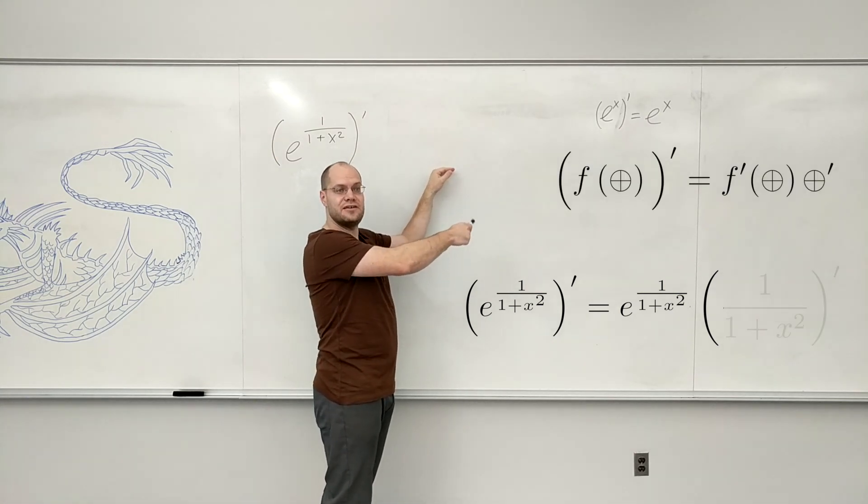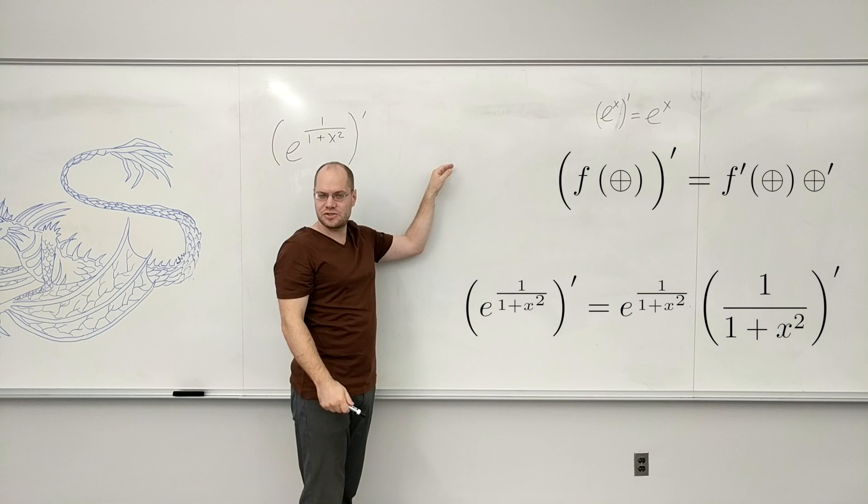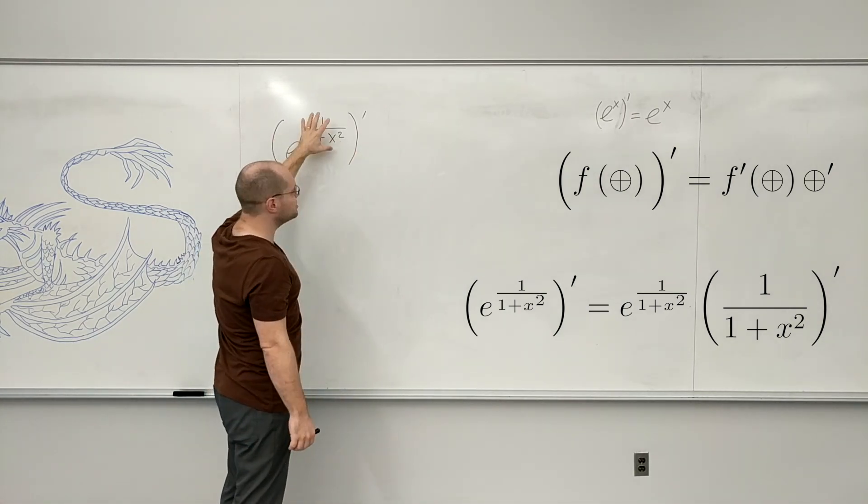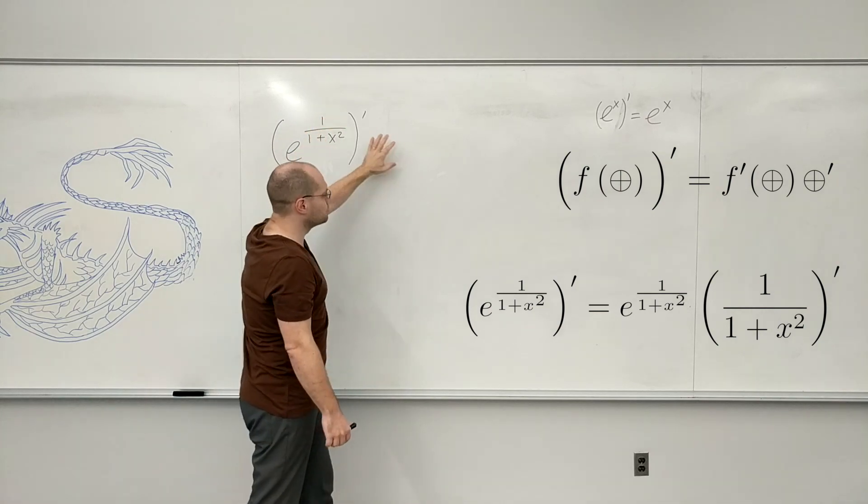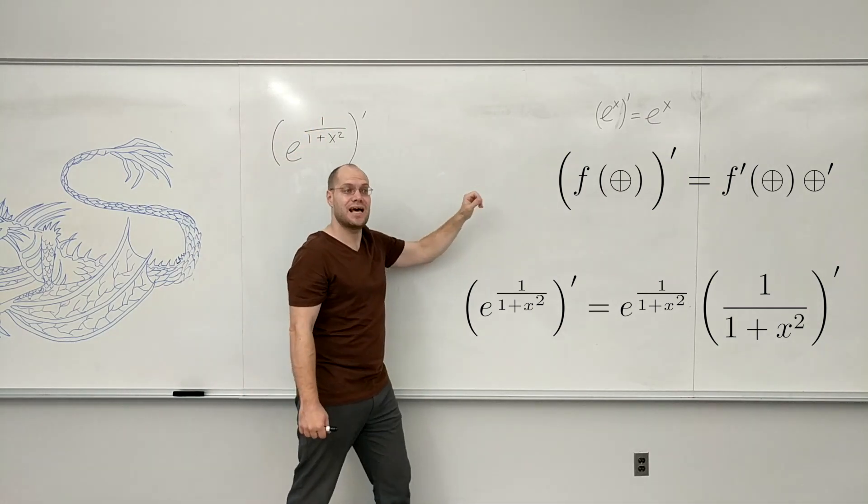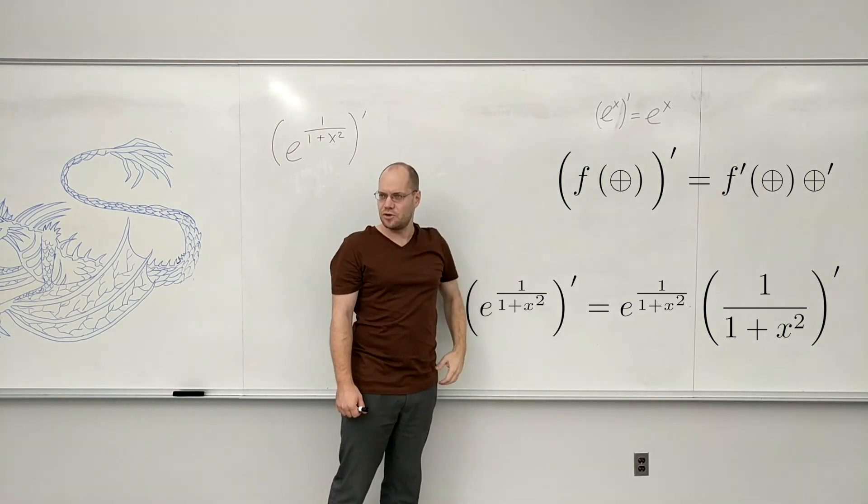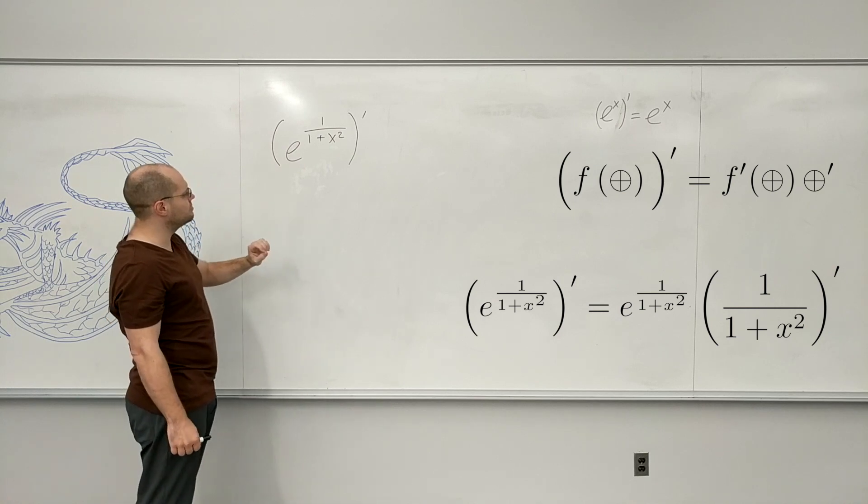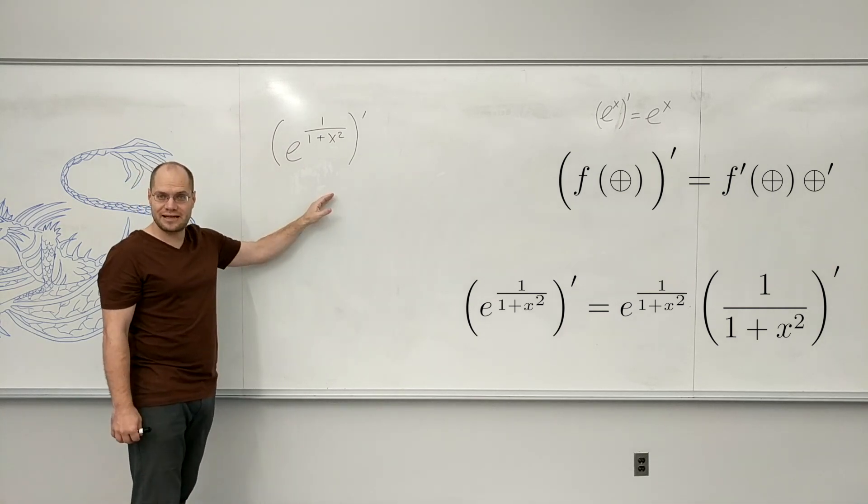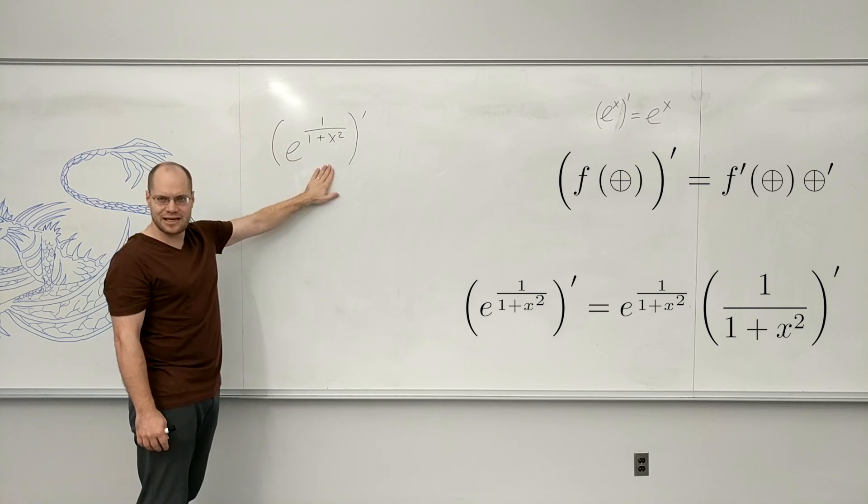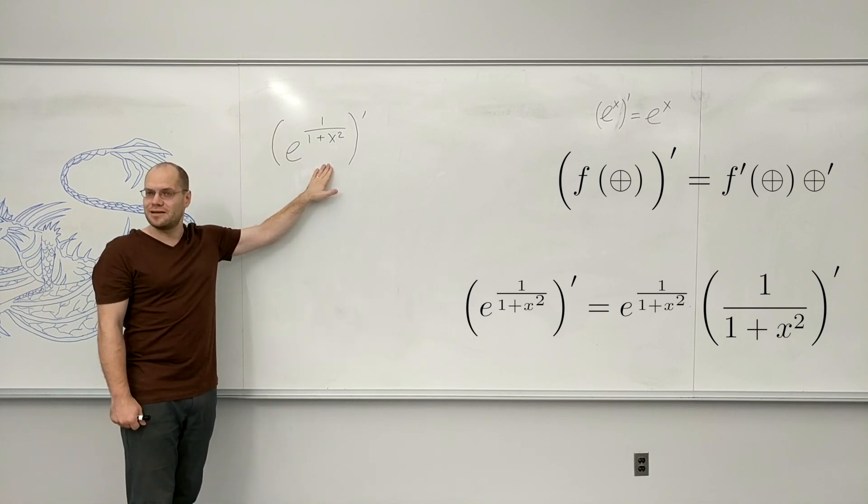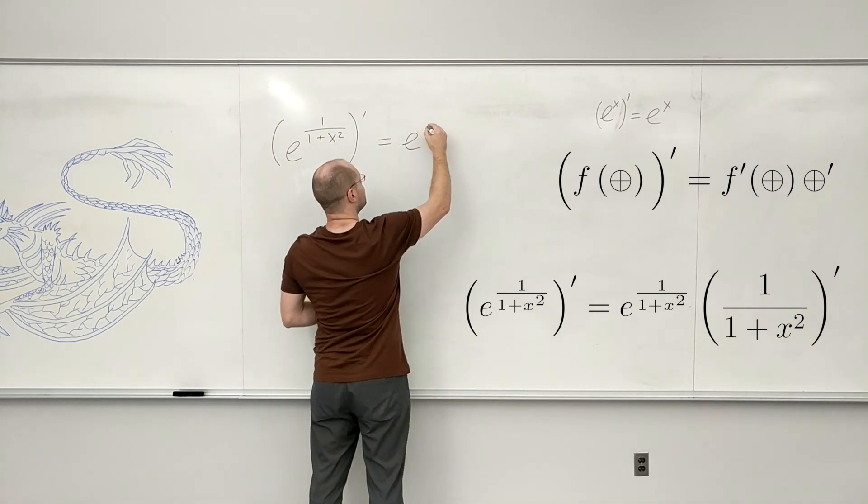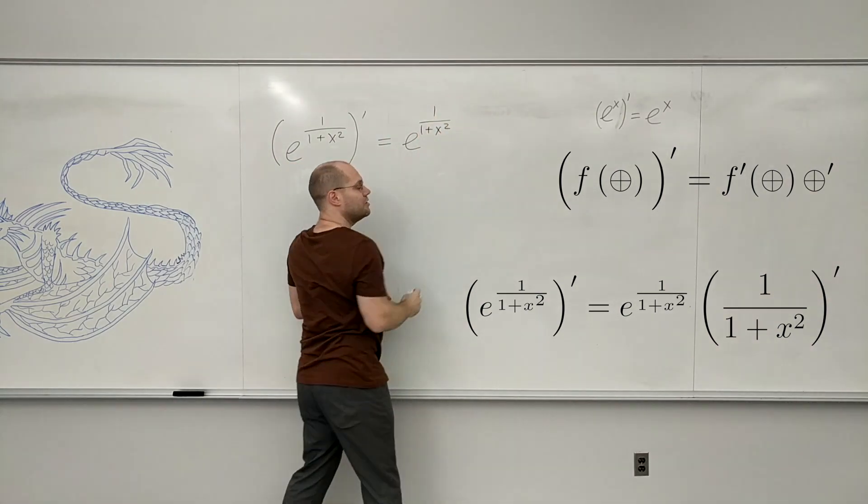Because the derivative of e to the x is e to the x itself, the derivative of e to something will still be e to something, following that rule. Then by the chain rule, you have to take the derivative of that something. It doesn't matter what power it is - as soon as it's e to some power, the derivative will be e to that power, times the derivative of that quantity.